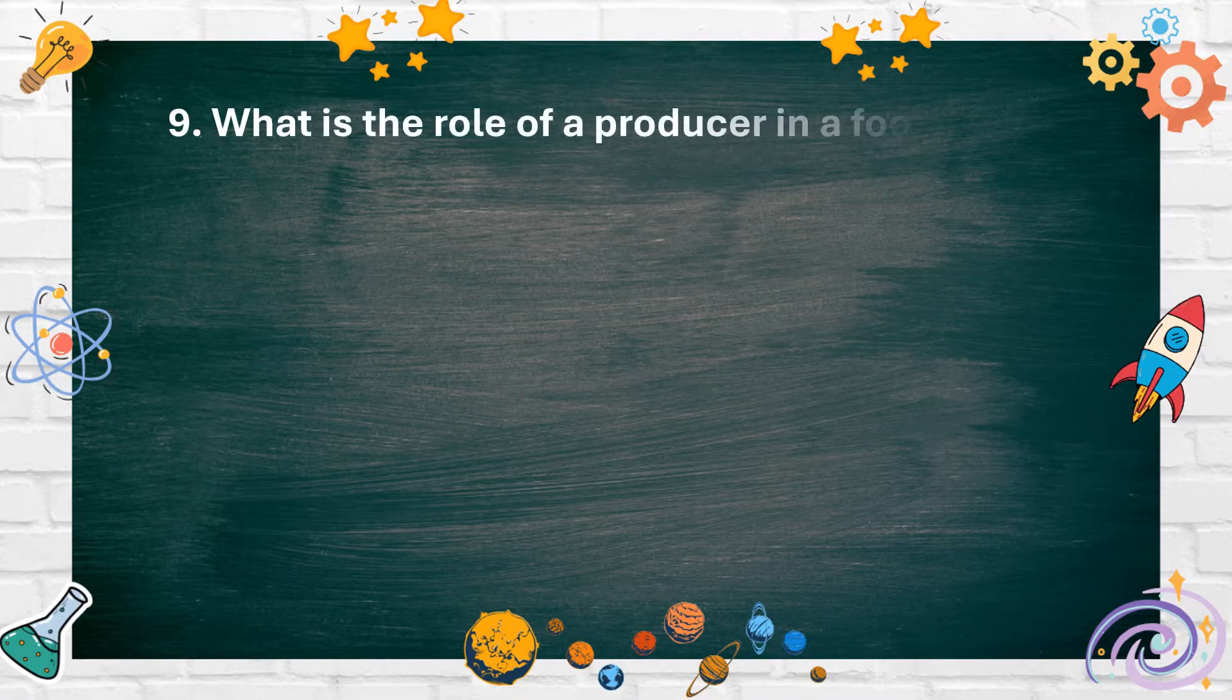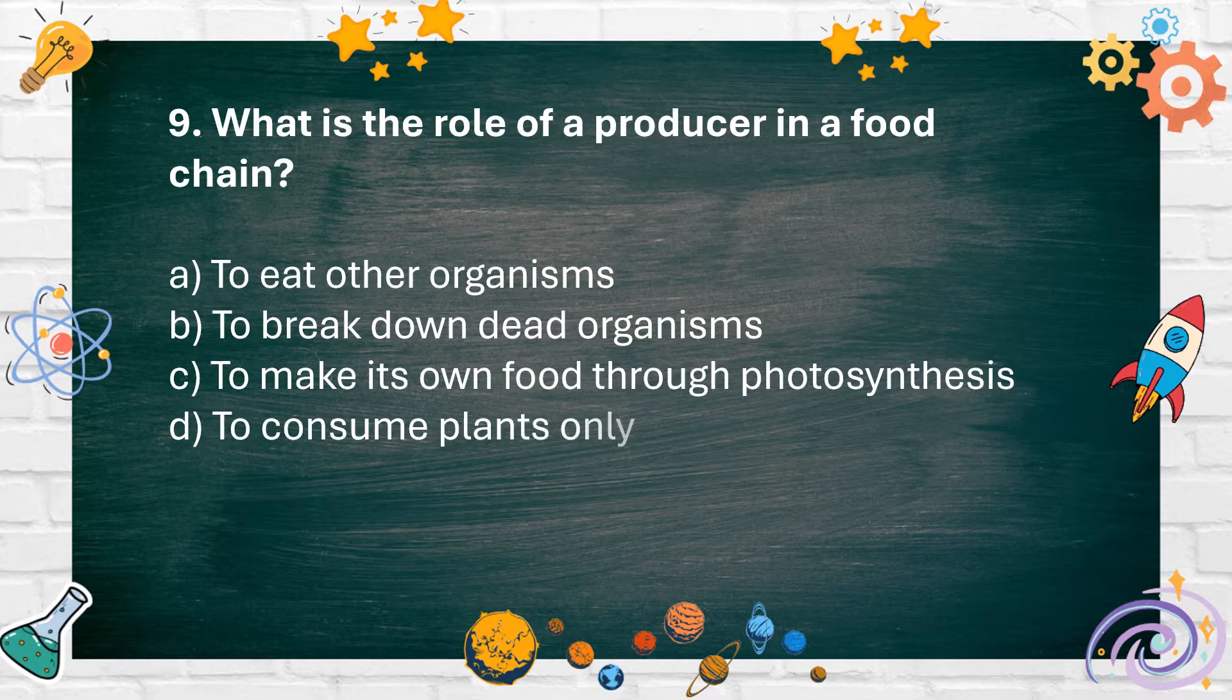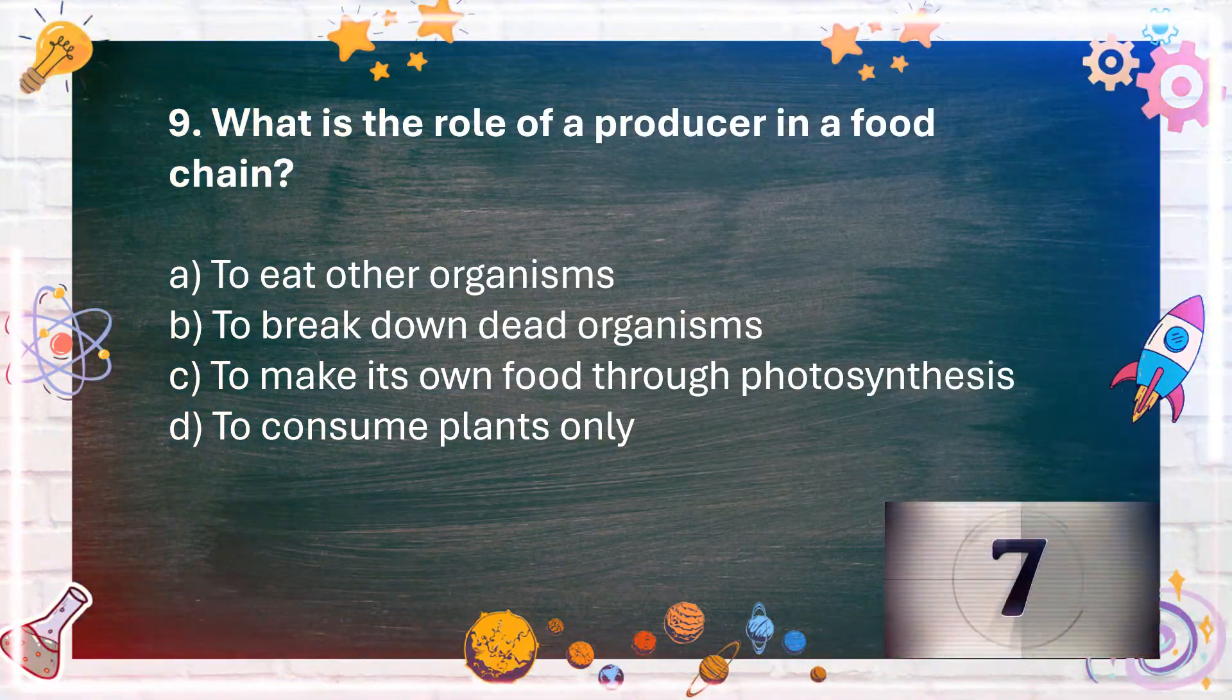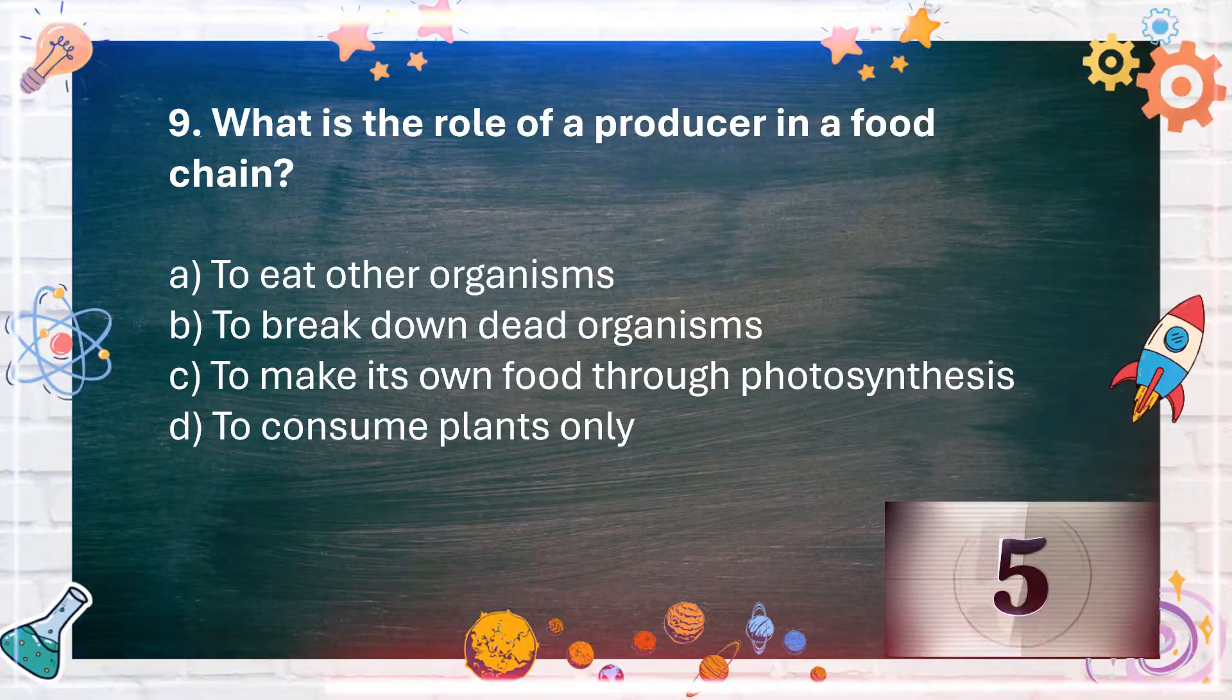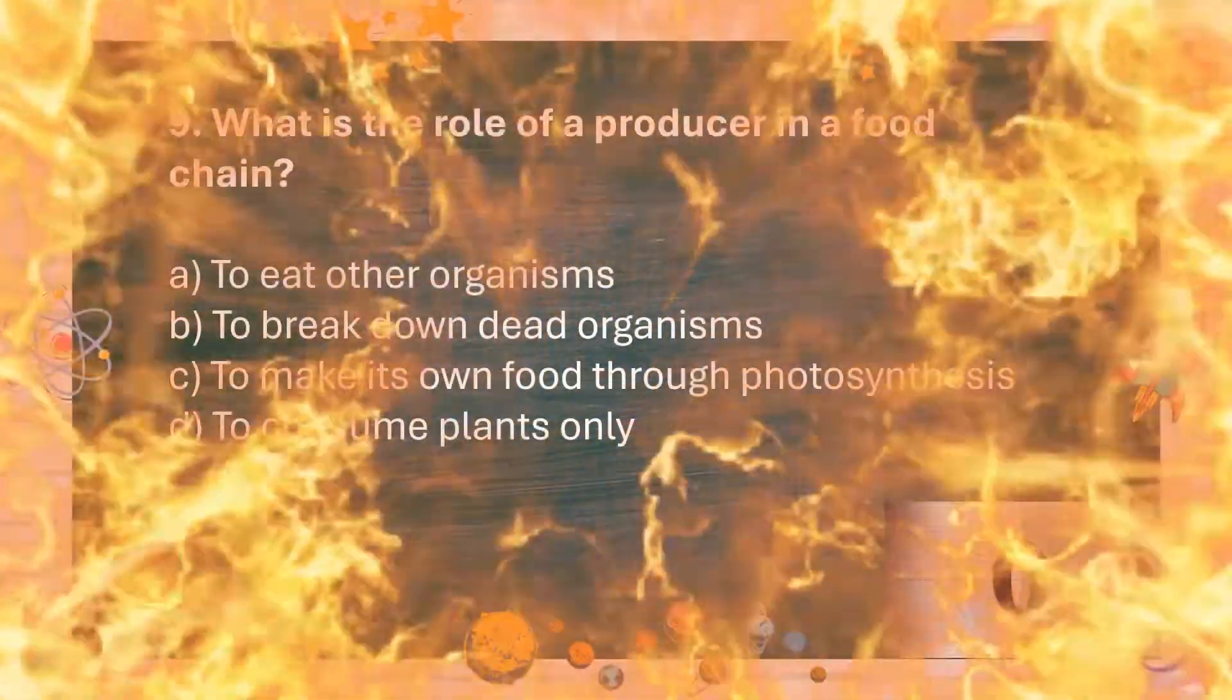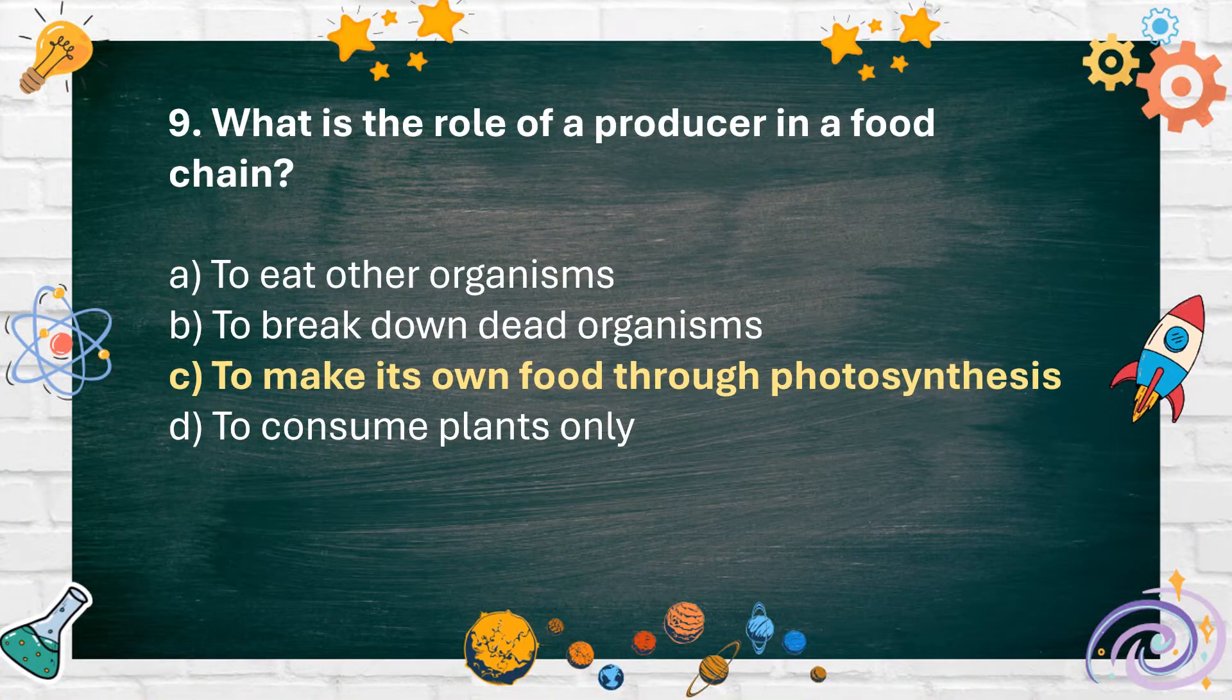Number 9: What is the role of a producer in a food chain? A. To eat other organisms, B. To break down dead organisms, C. To make its own food through photosynthesis, D. To consume plants only. The answer is C. To make its own food through photosynthesis.